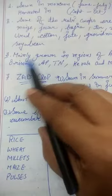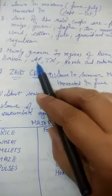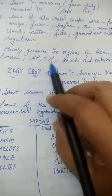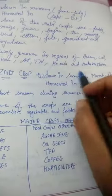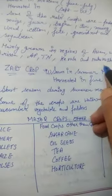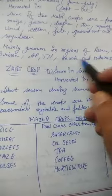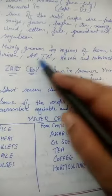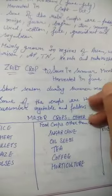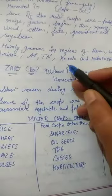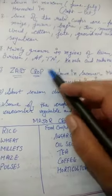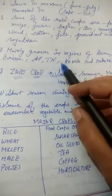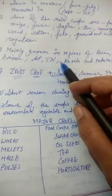These crops are mainly grown in the regions of Assam, West Bengal, Orissa, Andhra Pradesh, Tamil Nadu, Kerala and Maharashtra — areas where summer monsoon rainfall is high, particularly in coastal regions where monsoon is abundant throughout the year.